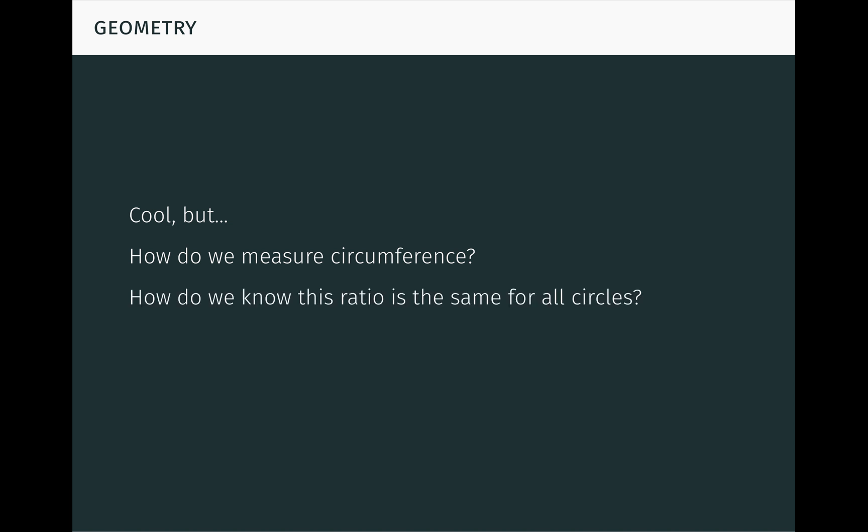Secondly, how do we know that this ratio is the same for all circles? For example, how do I know that it's the same for a tiny circle as for a really big circle? In order for this definition to make sense, we need to know that the ratio is always the same.